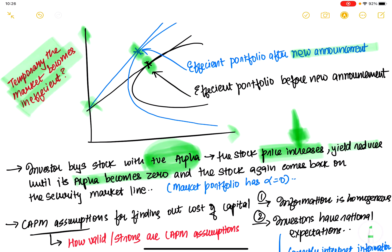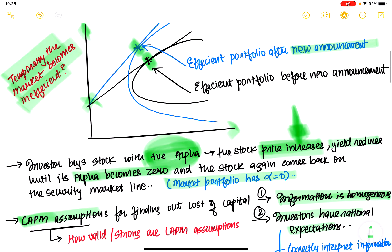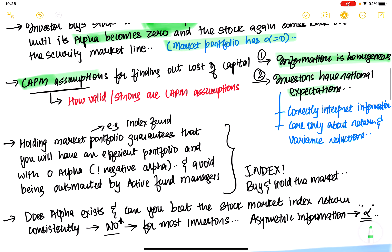The key assumption of CAPM is that information is homogeneous — everyone has the same information. But for alpha, you need asymmetric information — information that you have that others don't. That's why you benefit from investing early. The second big assumption of CAPM is that investors are rational: they correctly interpret information and care only about two things — return and reduction in risk.